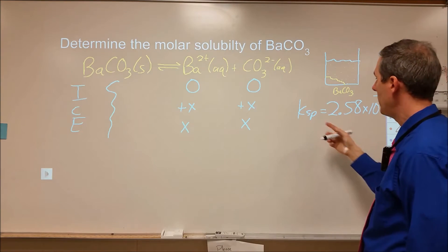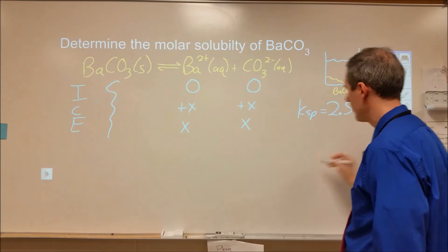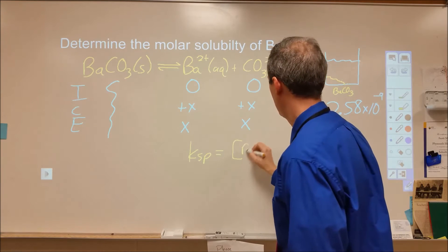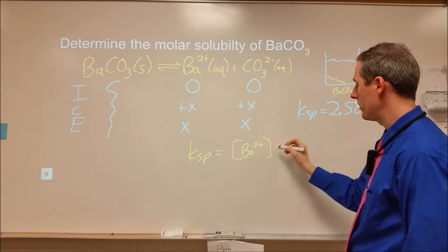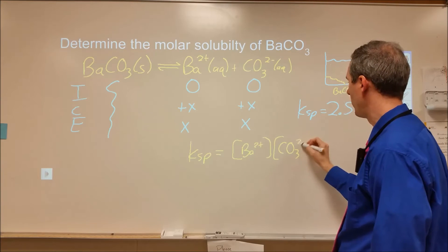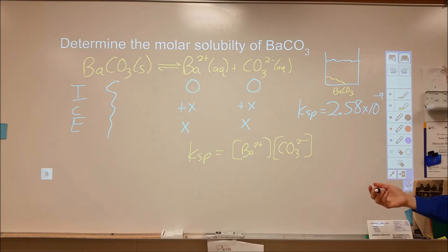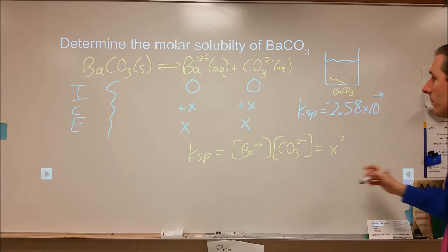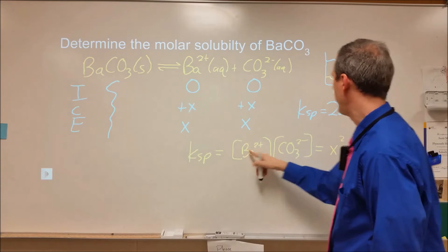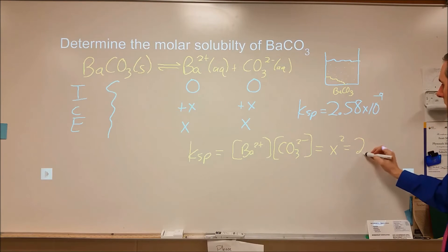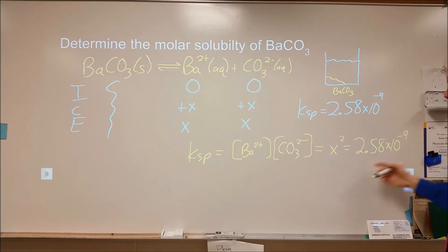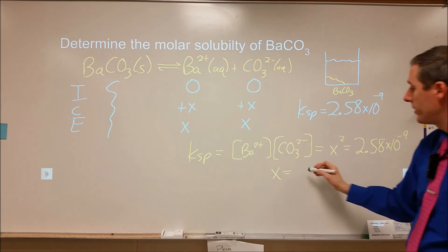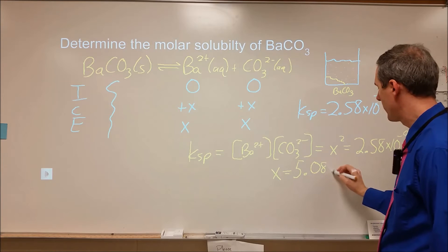Now we want to plug in to the KSP our expression. Our KSP expression is equal to our products: barium with coefficient 1 times carbonate with exponent 1. The barium carbonate is omitted because it's a solid. At equilibrium, this equals x squared. We can plug in our KSP value to be equal to that. x ends up being the square root of this value, which is 5.08 times 10 to the negative fifth.